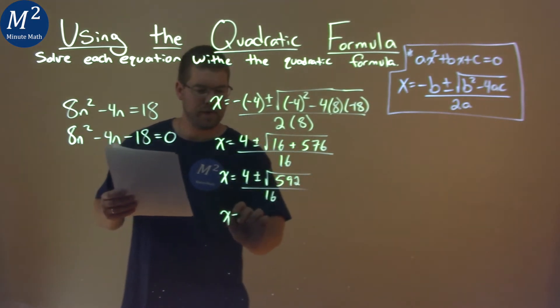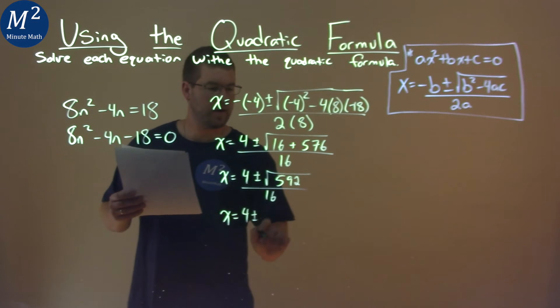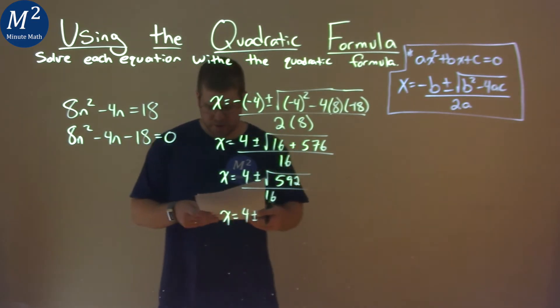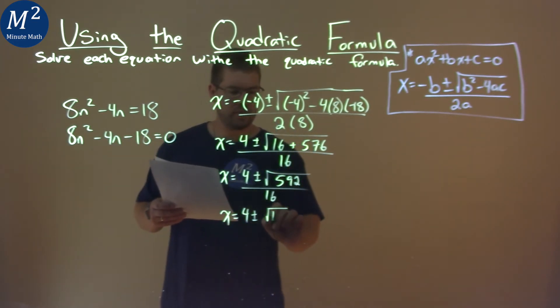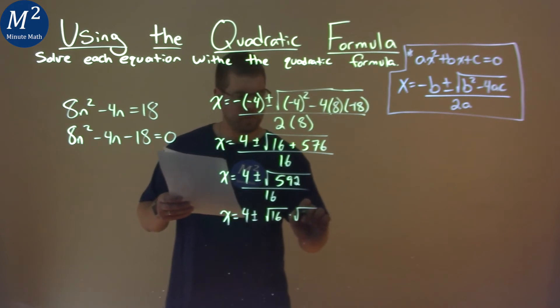Keep going. X equals 4 plus or minus, and the square root of 592 is the same thing as the square root of 16 times the square root of 37, all over 16.